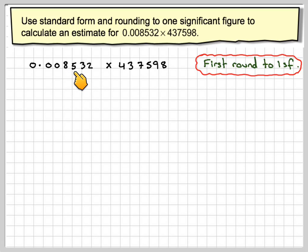So the first one will become 0.009, and this one will become 4 with 5 zeros, so 400,000.